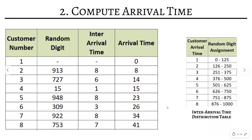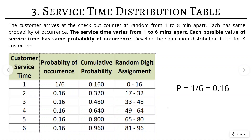Moving to the third step — calculating the service time distribution table. The service time varies from 1 to 6 minutes apart, so we have 6 rows starting from 1. Since service time has the same probability of occurrence, the probability is 1/6, which is approximately 0.16. The entire probability column is filled with 0.16.